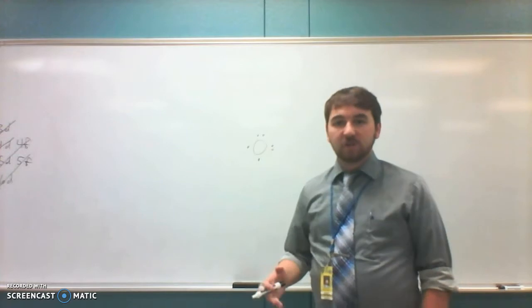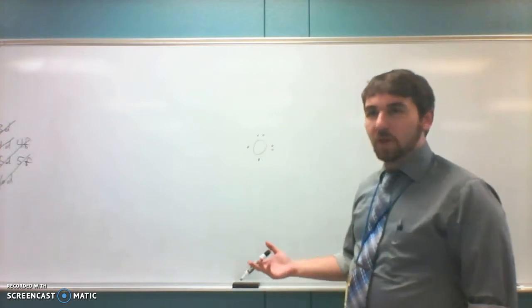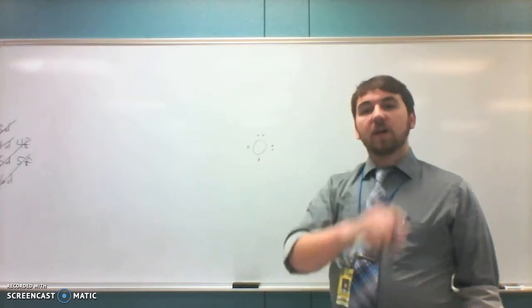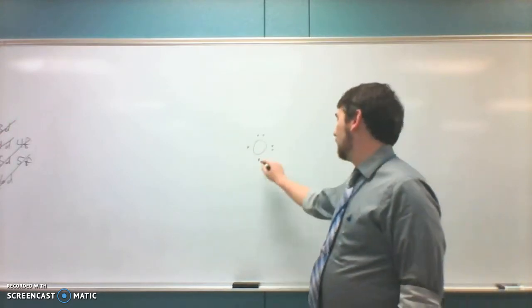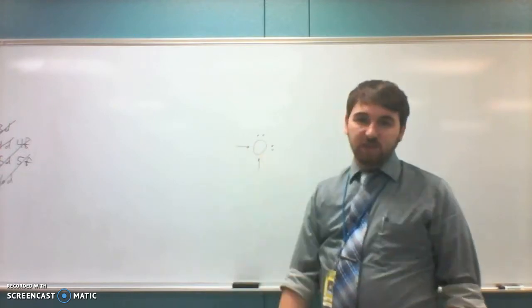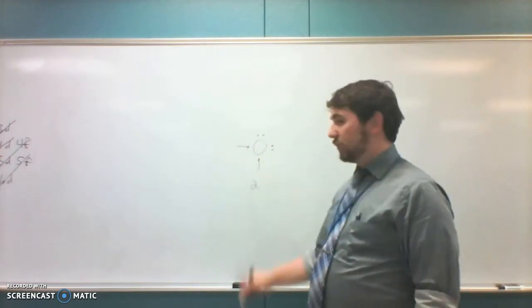So now I'm going to figure out just how many bonds it will form. Any unpaired electron, using the clock method, any unpaired electron will form a bond. So oxygen has those two unpaired electrons. Oxygen will form two bonds.